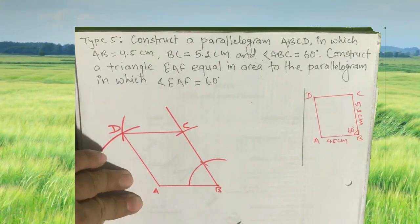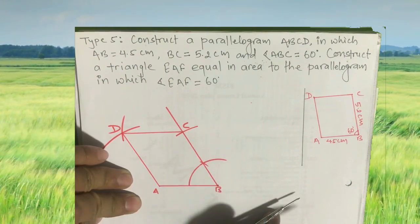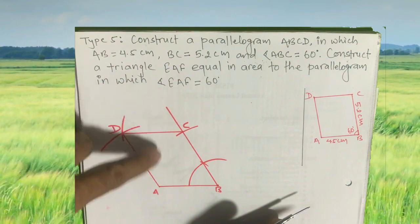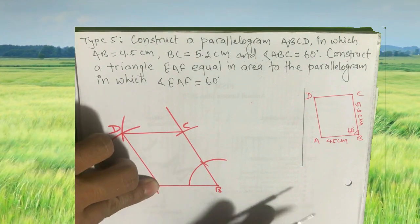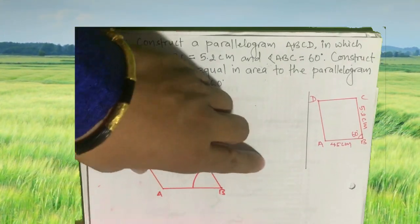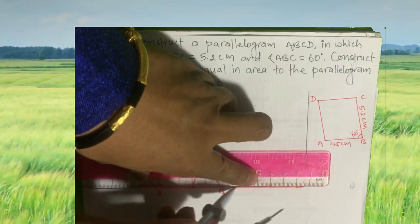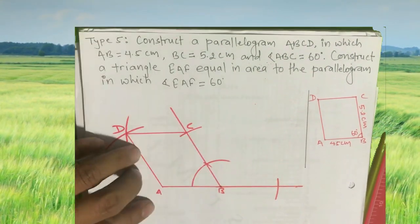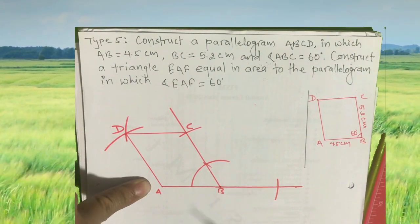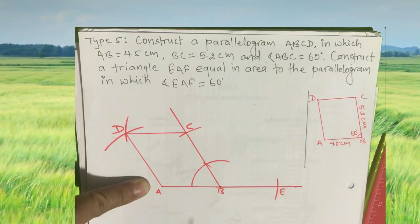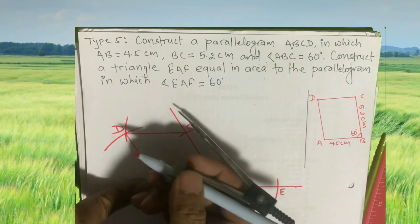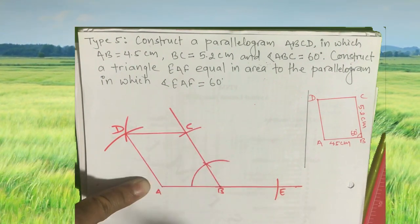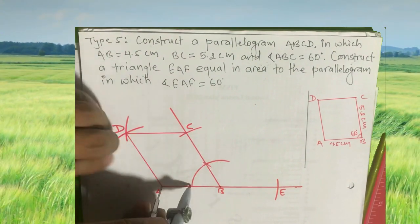Now this is your parallelogram ABCD. We have to construct triangle EAF which is equal to parallelogram ABCD in area. Extend the base AB and double the base for the triangle. In triangle EAF, angle EAF is equal to 60 degrees. At point A, construct an angle of 60 degrees.